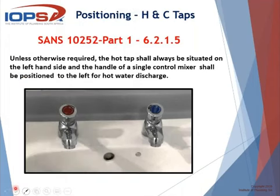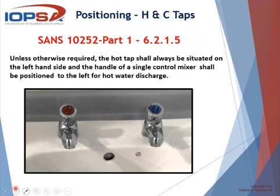Regarding the positioning of hot and cold water taps: SANS 10252 Part 1, sub-clause 6.2.1.5 is very clear — unless otherwise required, the hot tap shall always be situated on the left-hand side, and the handle of a single control mixer shall be positioned to the left for hot water discharge. There are only one or two exceptions, mainly regarding disabilities or old age homes. In general, this is the rule — let's apply it and make sure we comply.